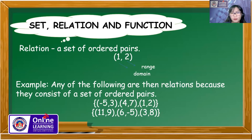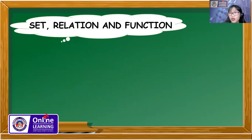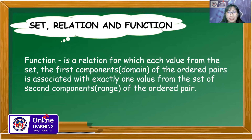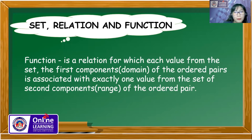How about the function? How can we say that a relation is a function or not? We define function as a relation in which each value from the domain of the ordered pairs is associated with exactly one value. It means there is one exact range value for each domain value.